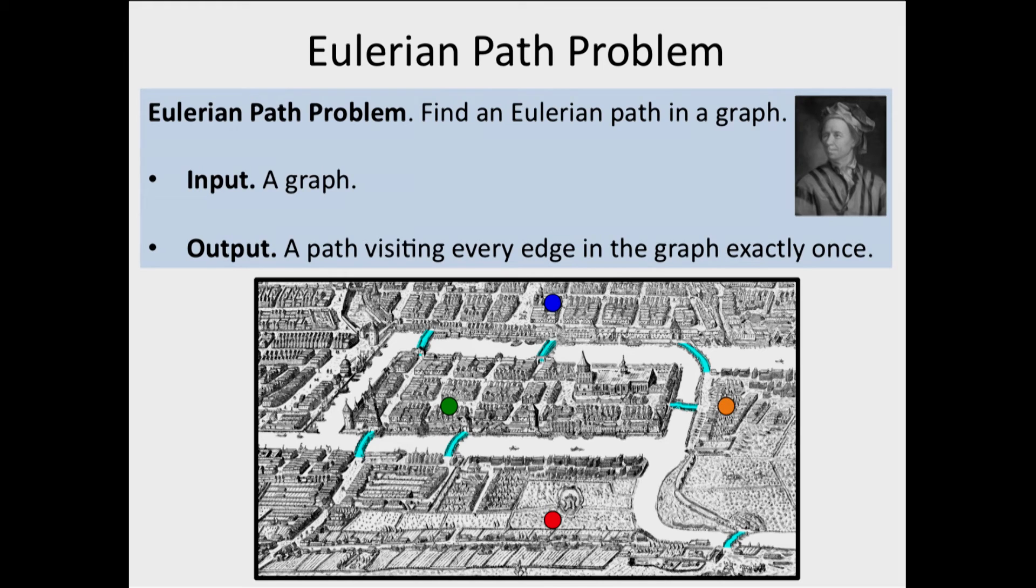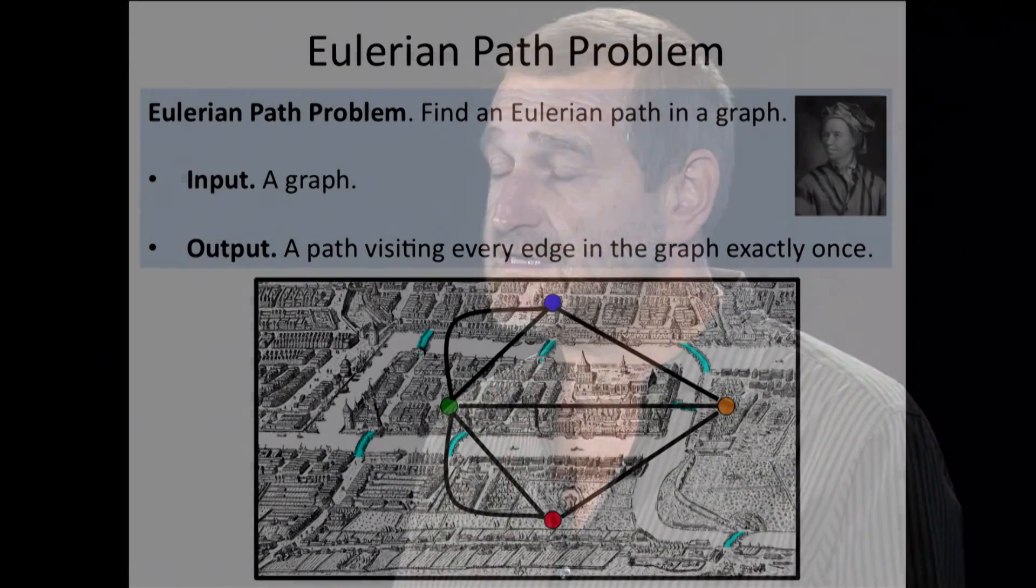Now, what Euler did, he constructed a graph by connecting four nodes in this graph. Each node corresponds to a district of the city. By an edge, if there is a corresponding bridge between these two districts in the city.